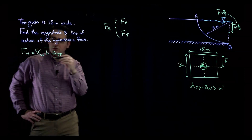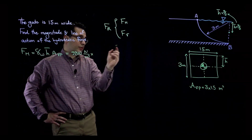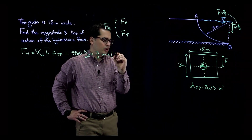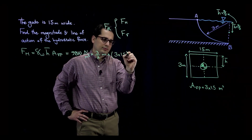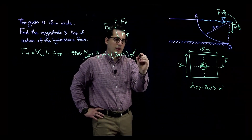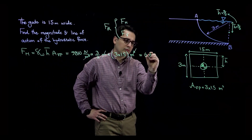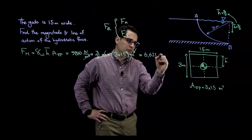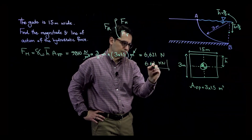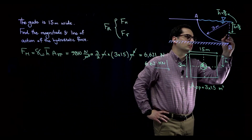Plugging in the numbers: F sub H = 9810 × (3/2) × (3 × 1.5). The result is 66,621 Newtons, or approximately 66.62 kilonewtons. This is the magnitude of the horizontal force, acting at the corresponding pressure point.